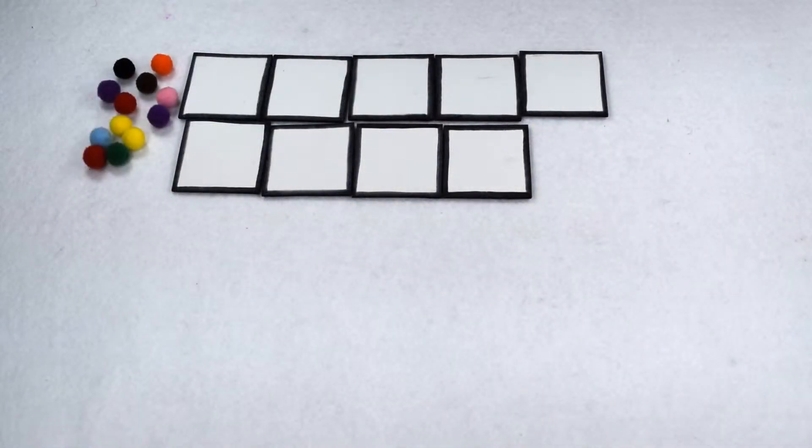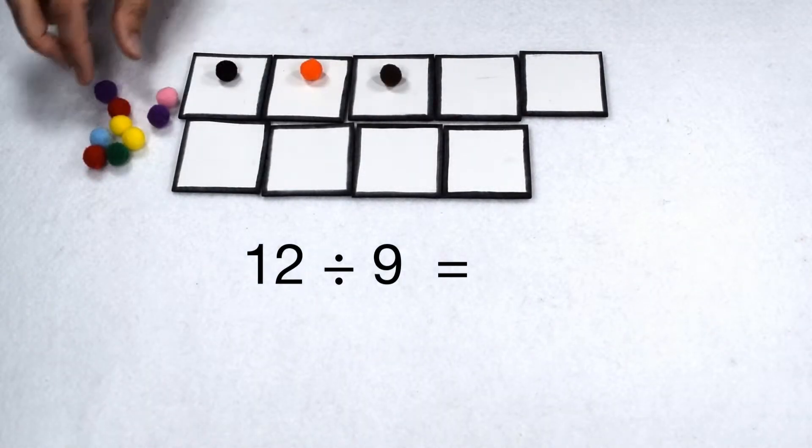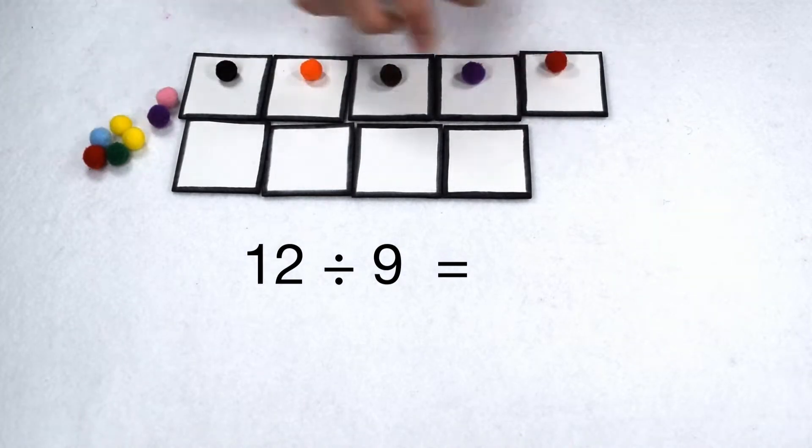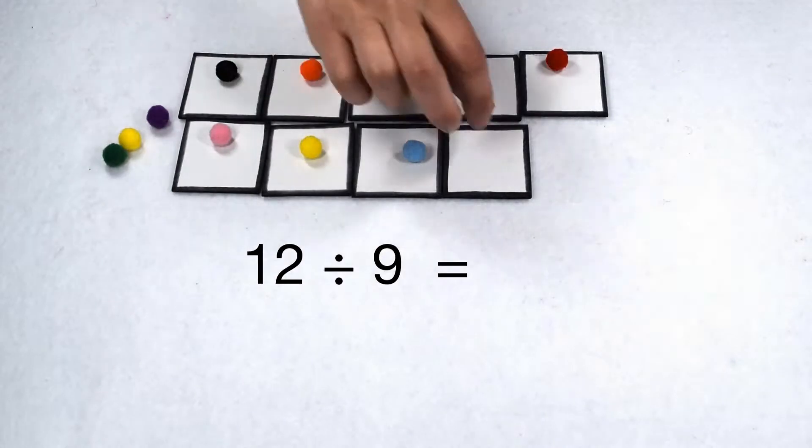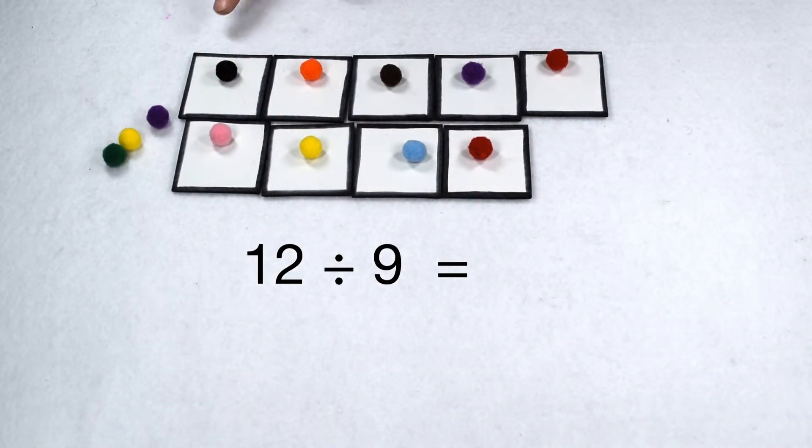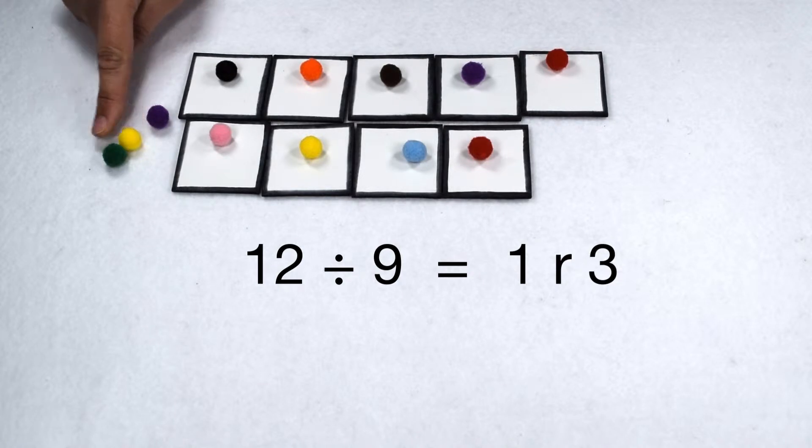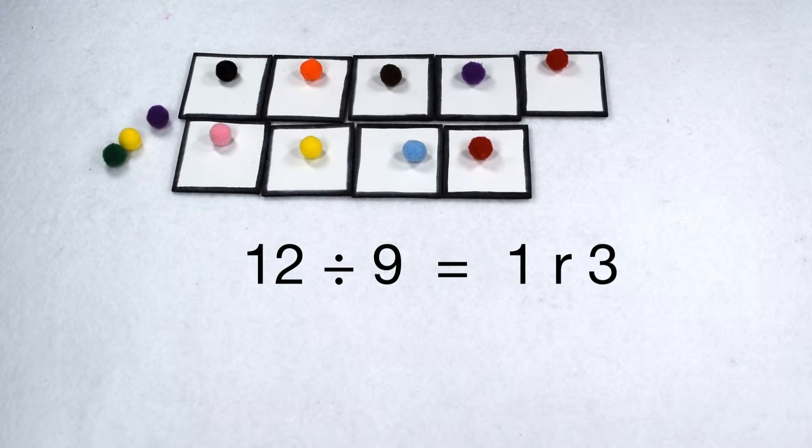Let's test this using another value. Here I have a dividend of 12 that I want to divide by 9. If 12 is divisible by 9, I should be able to put the same number of items in each group with no remainders. As we go through, we can see I can only put one item in each group and I have three items left over. I can't evenly distribute these three items over my 9 groups. So 12 divided by 9 gives me 1 remainder 3.